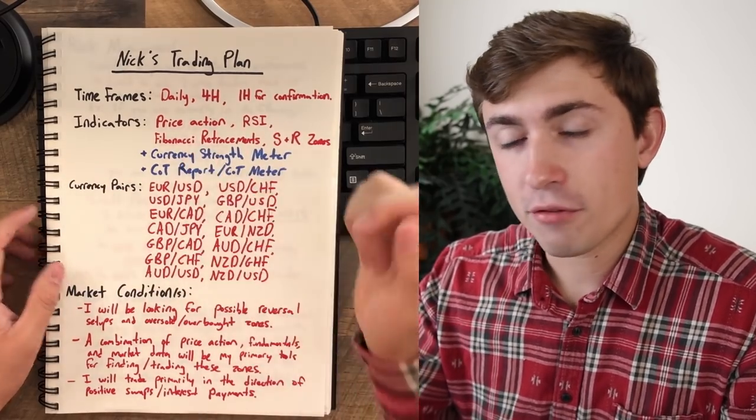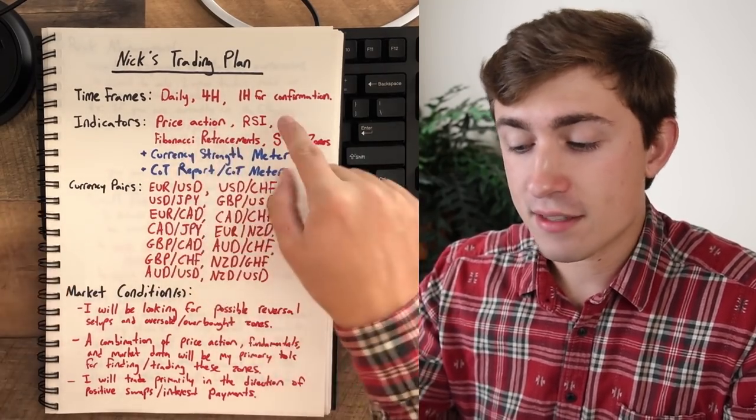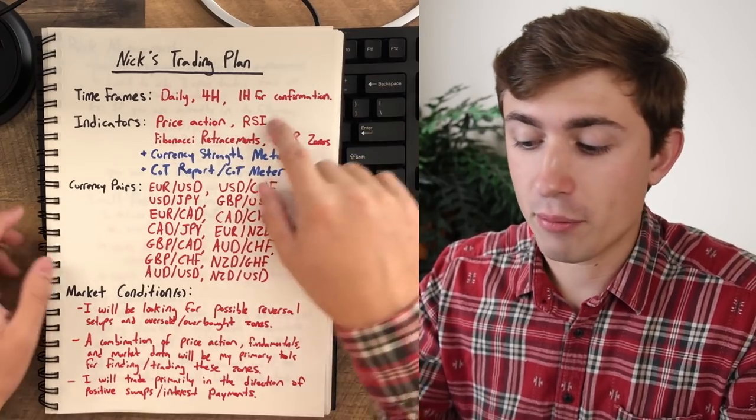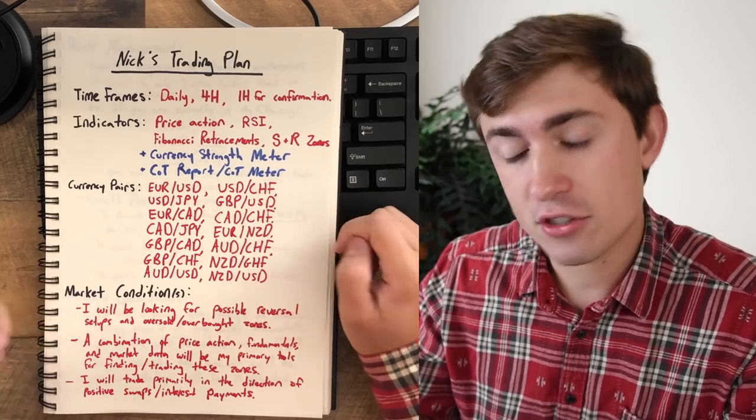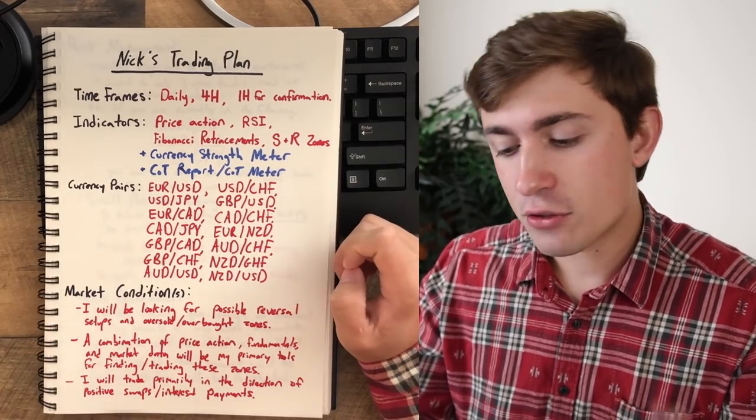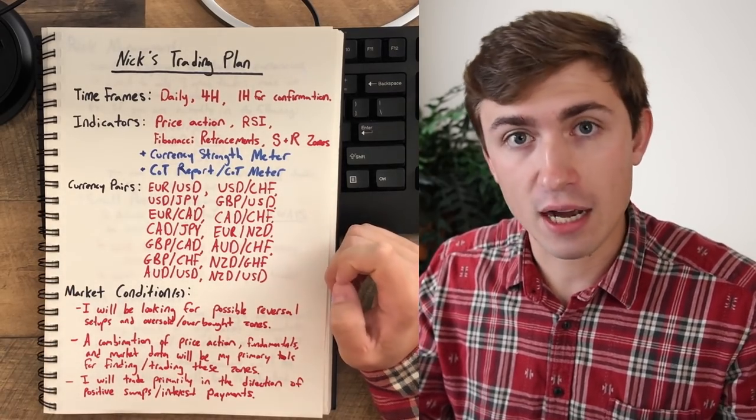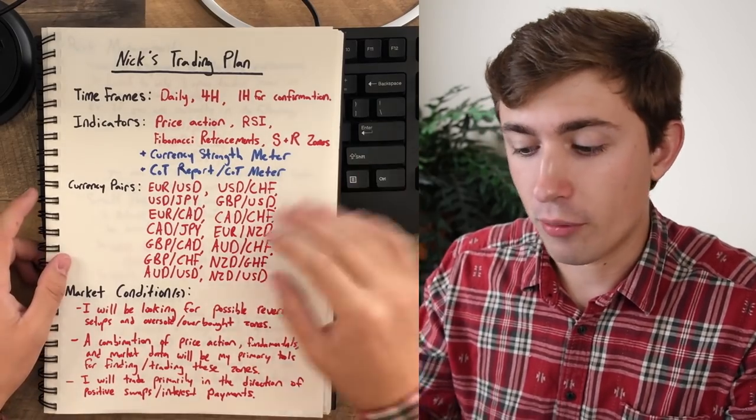Indicators. Mostly for my trading, I'm going to be using price action. And sometimes I'll look at the RSI for some sort of confirmation as well as Fibonacci retracements and heavily support and resistance zones. That's just my personal preference. But again, this trading strategy is not for you to just blindly copy. It's for you to get an idea of how you can create your own.